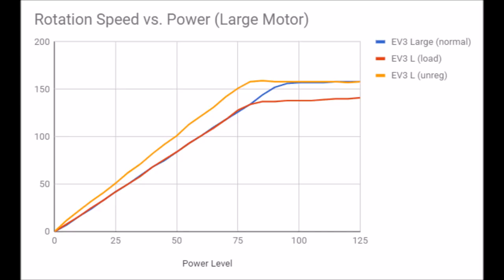My first graph here is rotation speed versus power for the large motor. As we see, the normal motor, which I tested in the last video, is in blue for comparison, alongside the red bar which is the motor with a load on it, and the orange which is the motor with the unregulated block.